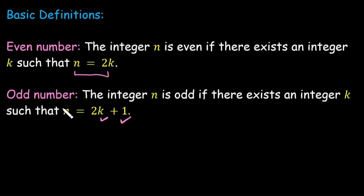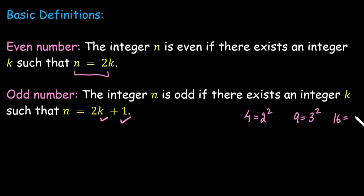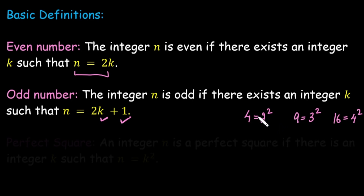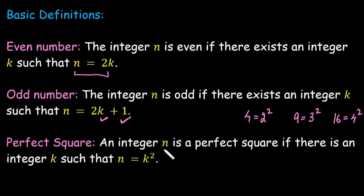Similarly, we can define perfect square. For example, 4 is a perfect square because it is written as 2 squared; 9 is a perfect square because it is 3 squared; 16 is a perfect square because it is 4 squared. So we define: n is a perfect square if and only if there exists an integer k such that n can be written as k squared.